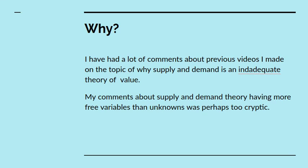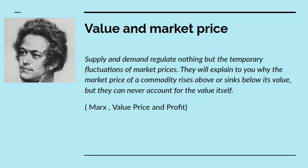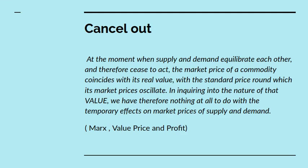So the first thing is to say what was the attitude of Marx to supply and demand? He says that supply and demand regulate nothing but the temporary fluctuations of market prices. They'll explain to you why the market prices of a commodity rises above or sinks below its value, but never account for the value itself. At the moment when supply and demand equilibrate each other and cease to act, the market price of a commodity coincides with its real value, with the standard price around which its market prices oscillate. In inquiring into the nature of value, we have therefore nothing at all to do with the temporary effects on market prices of supply and demand.